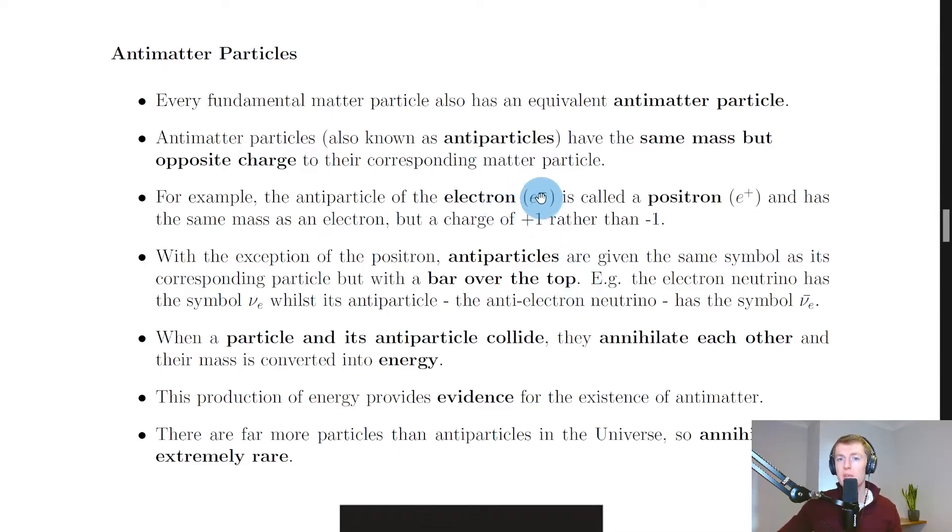And you'll see here we gave the electron the symbol e with a little minus superscript, and we gave the positron the symbol e with a plus as the superscript, and that's to show the sign of the charge on the particle.